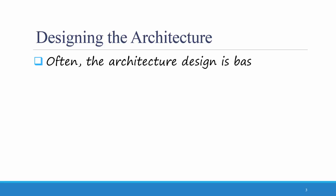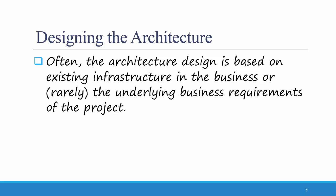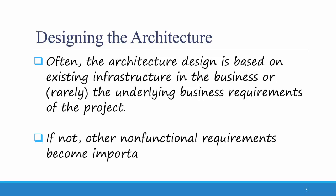Often, the architecture design is based on the existing infrastructure in the business or, rarely, the underlying business requirements of the project. For example, if an organization is already running Windows-based applications like in our project, then it might make sense to use Windows-based software in your architecture design. Another example is if your company is already using mobile web apps, then designing a new system to match that setup might be beneficial. If pre-existing architecture or other business requirements of the project don't dictate your architecture design, then other non-functional requirements will become very important.